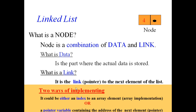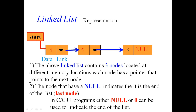The address is also called a pointer. The structure of the node is shown here where the first part stores the data and the second part stores the link. The link is basically used for storing the address of the next node.